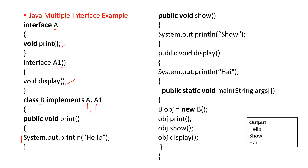Class B implements both interfaces A and A1, separated by a comma. You define the print method from interface A and the display method from interface A1. In the main section, an object is created, and obj.print is called — so 'hello' is printed. Then obj.show is called and 'show' is printed. Then in display, 'height' is printed.